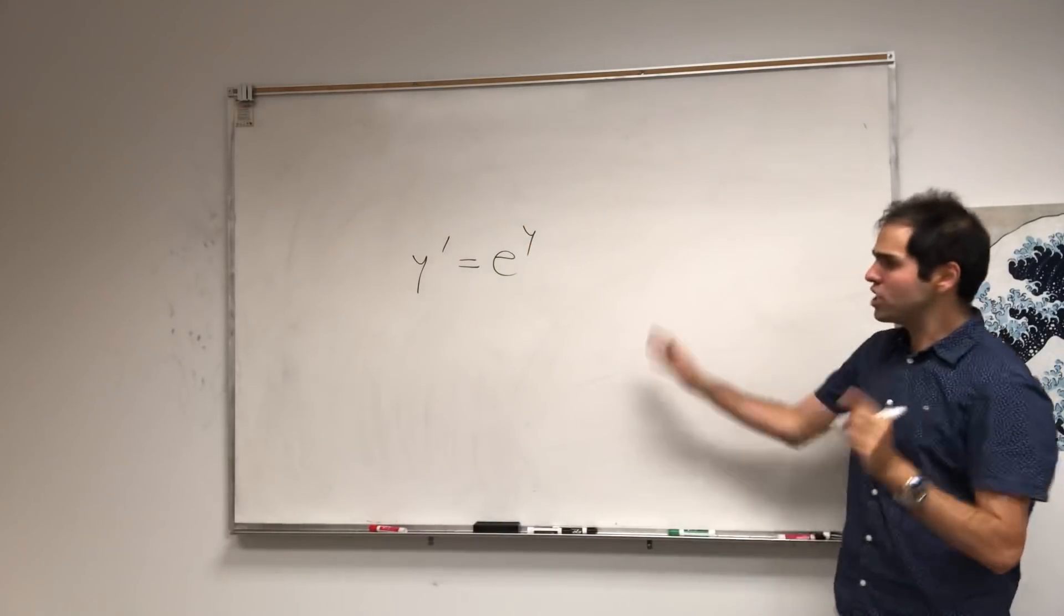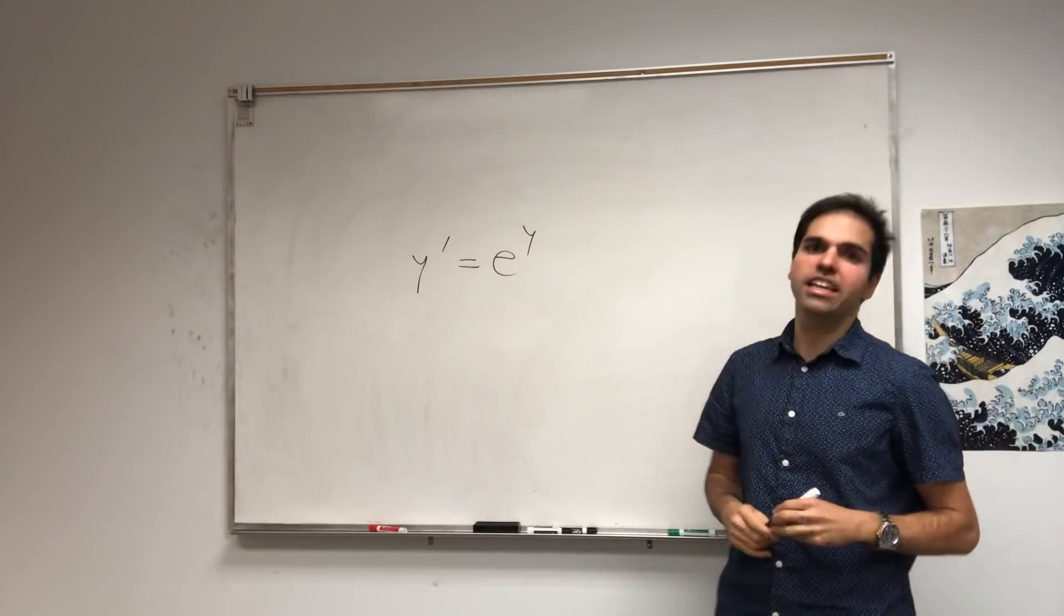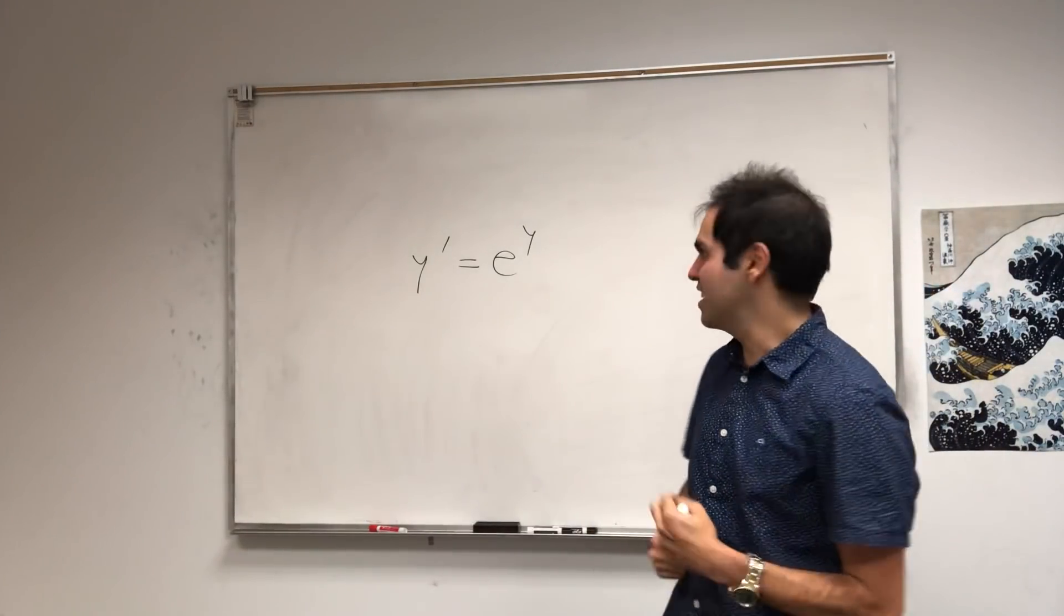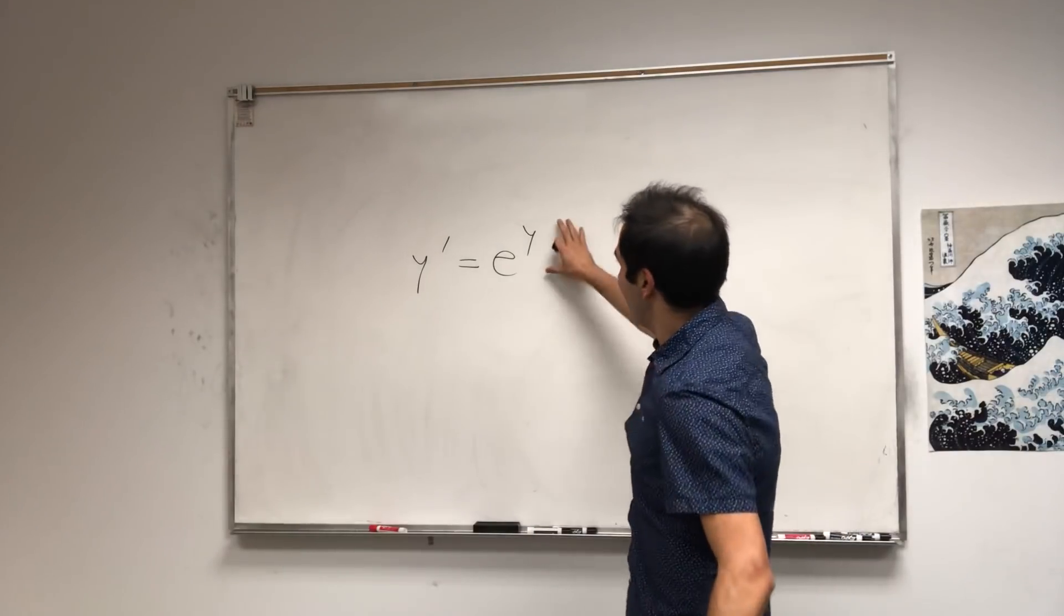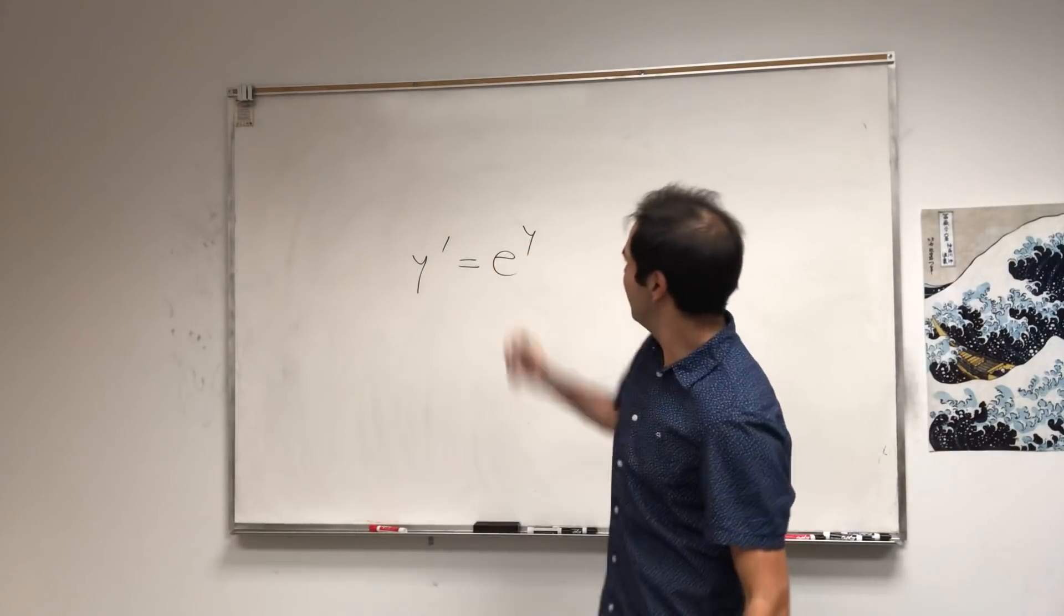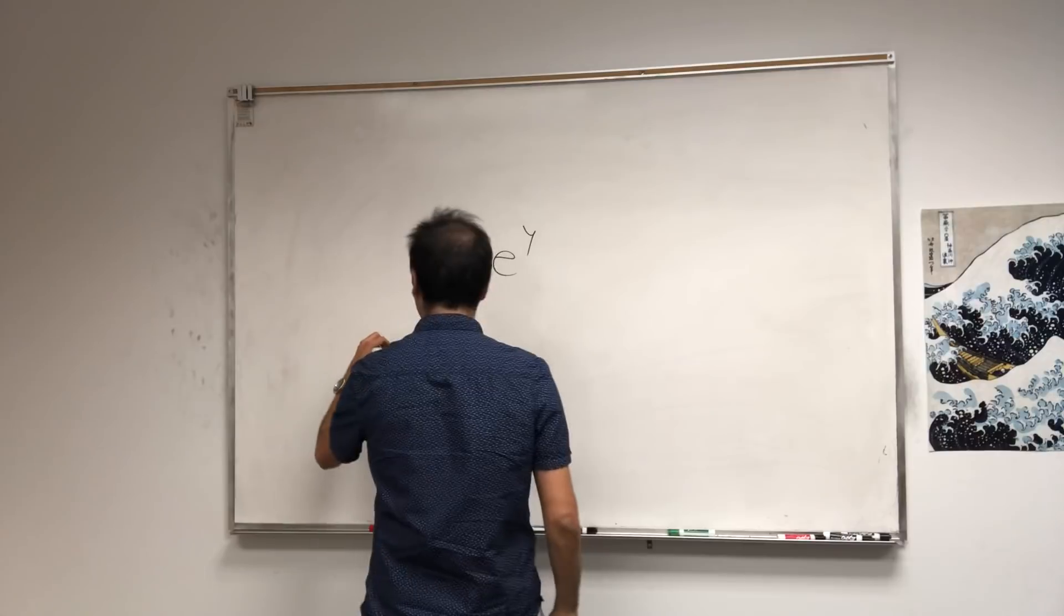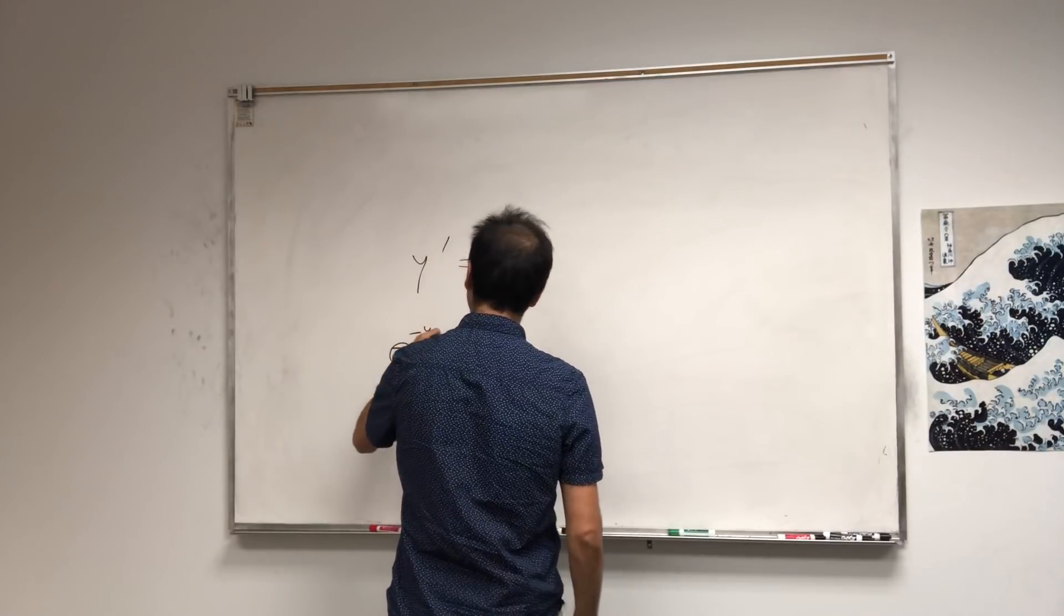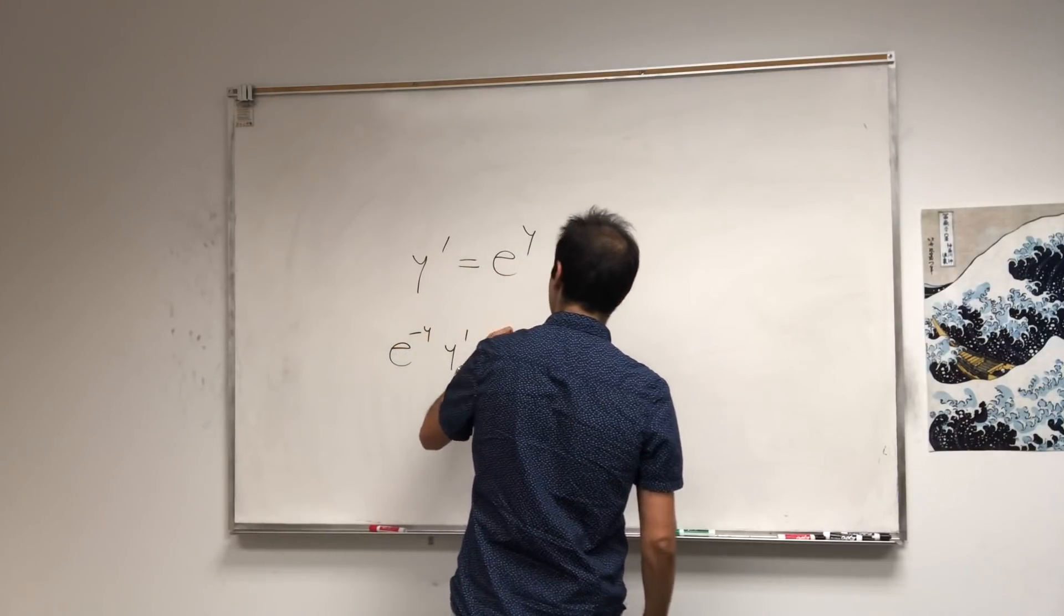So in other words, which functions have the property that if you differentiate them, it's the same thing as exponentiating them? Well, it's not too bad. Just pull the e to the y on the left hand side. So e to the minus y, y prime equals 1.